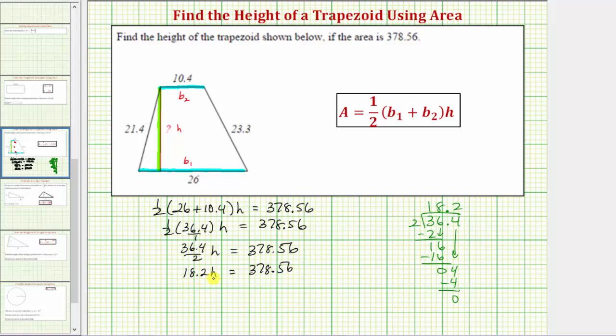Of course, we can verify this on the calculator as well. 36.4 divided by two is 18.2. Because 18.2h means 18.2 times h, to solve for h, we need to undo this multiplication by dividing both sides by 18.2.